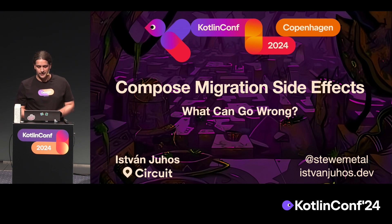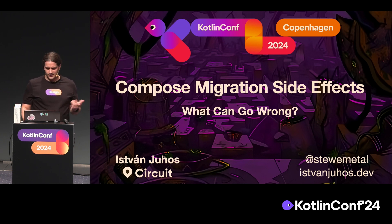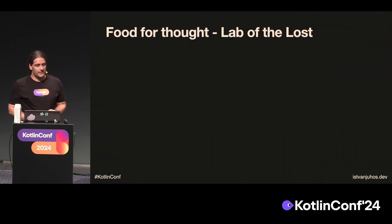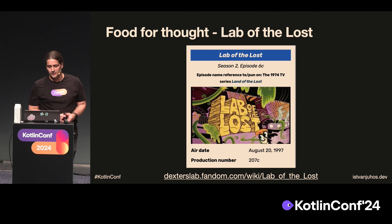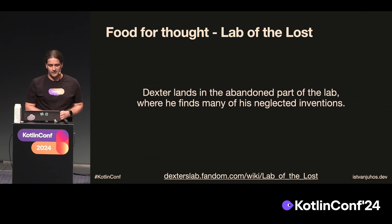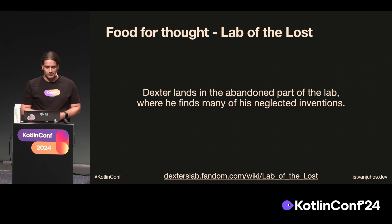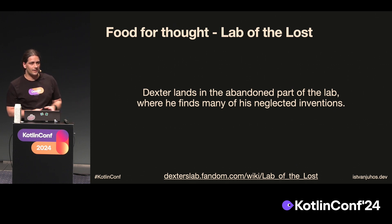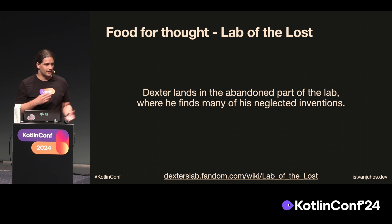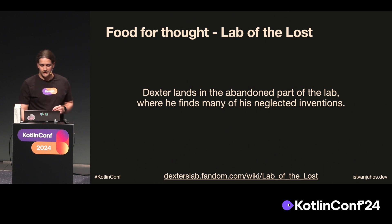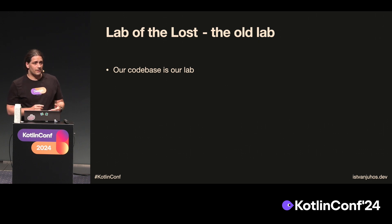Before we dive deep into some topics, some explanation of the background. It's AI-enhanced, just because I have to mention AI today. Why it is AI-enhanced is because it's taken from an episode of a 1979 show called Dexter's Laboratory, and the episode is called Lab of the Lost. The synopsis of the short episode is our protagonist, who built this physics-defying sci-fi laboratory in his parents' basement, accidentally lands in this old, really old, neglected, forgotten part of his laboratory, where his old neglected inventions turn against him.